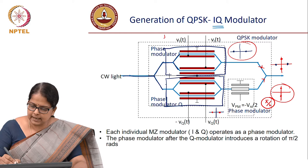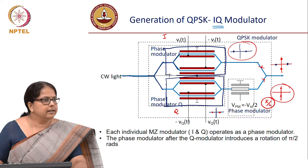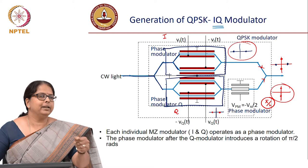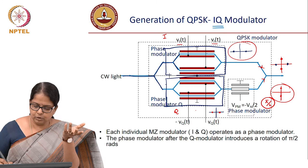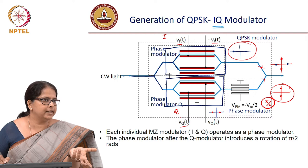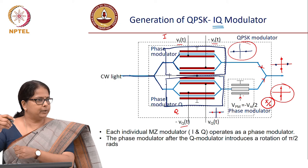You call this the I arm — the in-phase component — and this the quadrature component. You make it a quadrature component by adding the pi by 2 phase shift. How many voltages do you need to apply into this modulator? You will have V_I which is your in-phase data and V_Q which is your quadrature data.